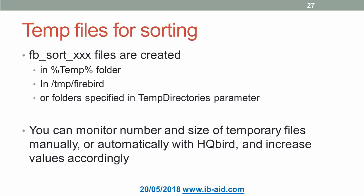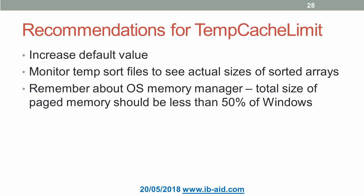HQbird can also show queries with sorting memory exceeding a specified limit. What are the recommendations for TempCacheLimit? First, we must increase the default value because it is low. We need to monitor temp files for sorting to see the actual size of arrays being sorted, and use that to understand how much memory to allocate in TempCacheLimit. We must also remember that the total size of paged memory should be less than 50% of available Windows RAM, and that memory for sorting is allocated on demand.